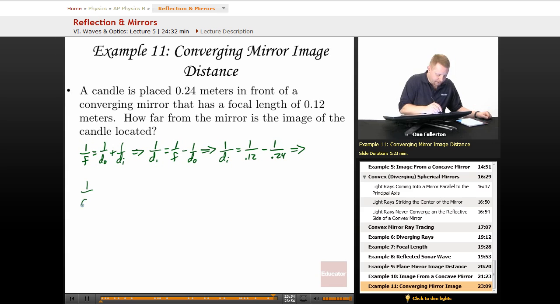Therefore, 1 over DI must be equal to 1 over 0.12 minus 1 over 0.24. That's going to be 4.17 inverse meters, meters to the negative 1. Therefore, DI will be 1 over 4.17 inverse meters, which is going to be 0.24 meters.